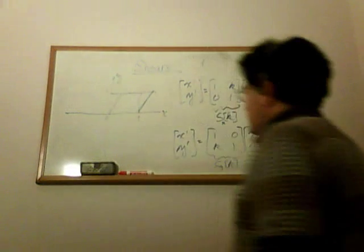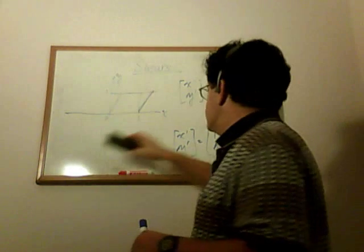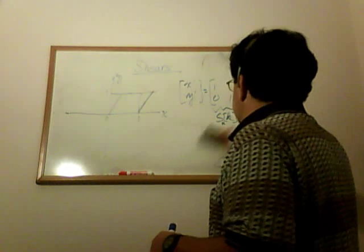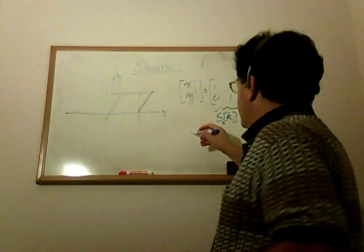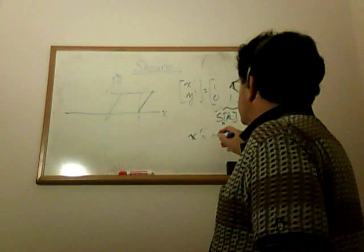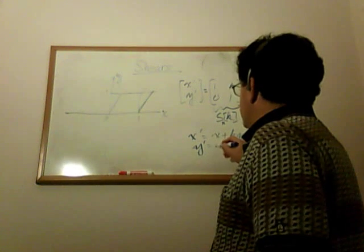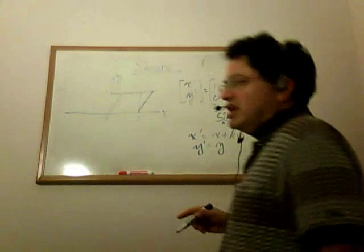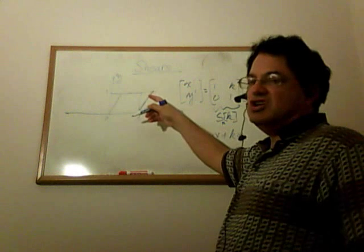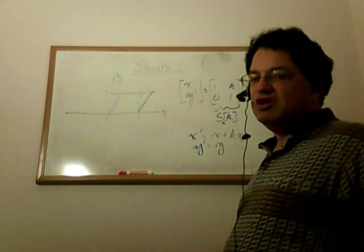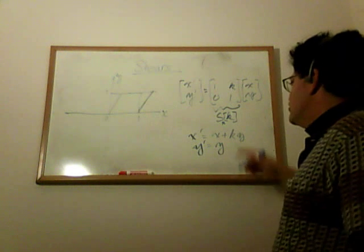So, what a shear in the X direction does, if you write down the coordinates, which I probably should have done. So, let's look at the X shear. You get X prime equals X plus KY, and Y prime equals Y. So, you notice that it leaves Y alone, which you can see from this diagram here. Y equals 1 doesn't change; the upper edge of the parallelogram stays at Y equals 1. But the X values are changing.